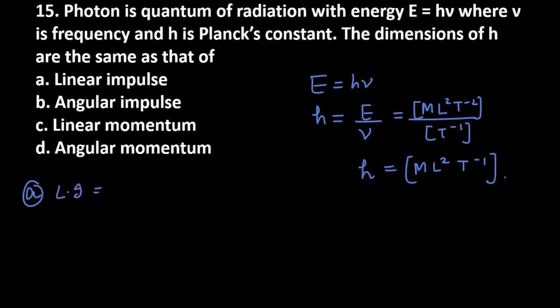Linear impulse is F·t, which we can write as Δp over Δt times Δt, giving us Δp equals mv. Its dimension is M times L times T⁻¹. You can see that linear impulse doesn't match with h, so option a is cancelled.